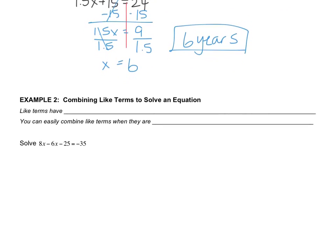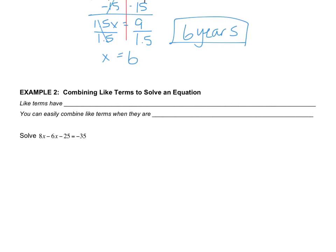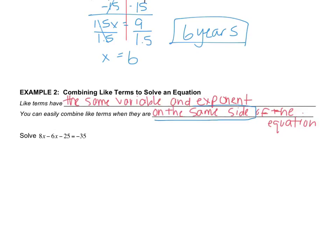Now something else you might have in an equation is what's called like terms. So like terms, let's define that first. They have the same variable and exponent. Now in chapter 1, we don't really deal with exponents. We're going to deal with that as we get more advanced. But right now, what you want to look, for example, is if you look at this, 8x and 6x are considered like terms because they both have an x in them. Now you can easily combine like terms when they are on the same side of the equation. And I emphasize same side. That might be something you want to highlight and annotate because in our next lesson, we're going to look at when the like terms are on opposite sides. And the technique is different.